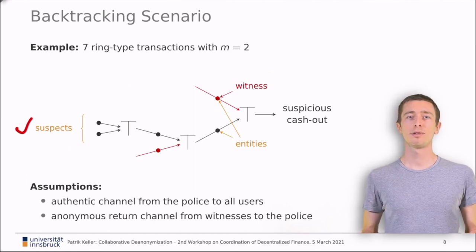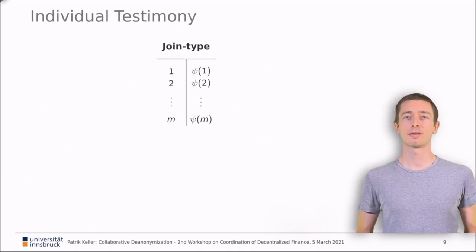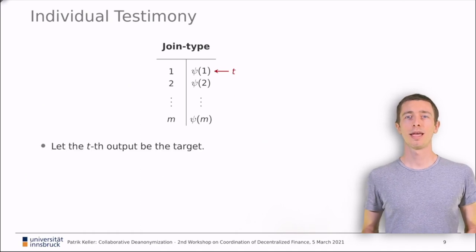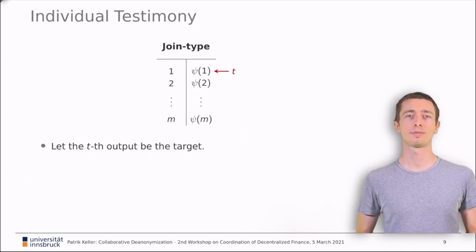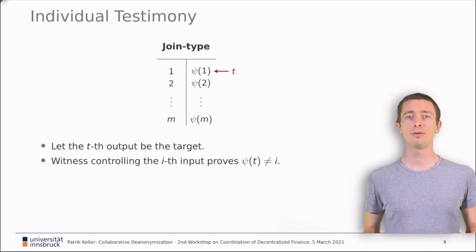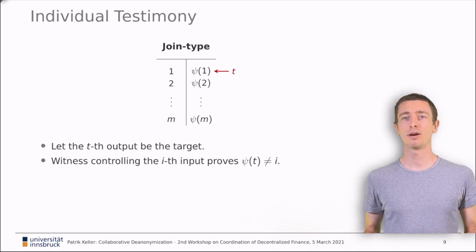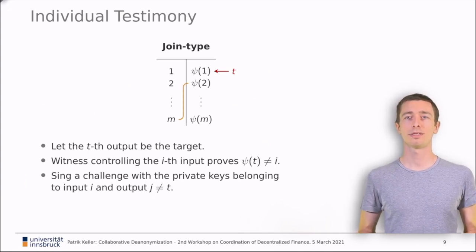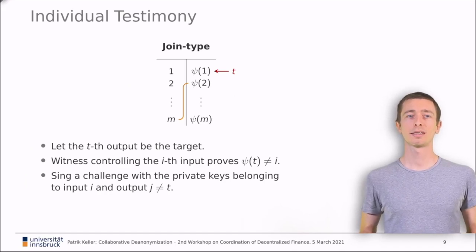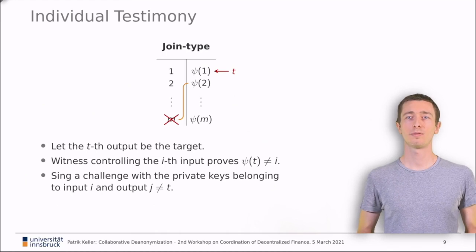But let's have a look at individual testimonies first. We start with joint type transactions. We assume that one of the outputs belongs to the suspicious cashout. We call it the target output T. In this example, T is the first output. The police wants to know which input funds the target output T. Quite obviously, a witness wants to prove that its own input did not fund T. It can do this by revealing the true link associated with its input and output. For example, it could use the two private keys belonging to input and output to sign a challenge provided by the police. The true suspect does not have access to the witness's keys and thus cannot sign the challenge. The police learns one true link that is not associated with the target output. The anonymity set of the suspect is reduced by one per individual testimony.